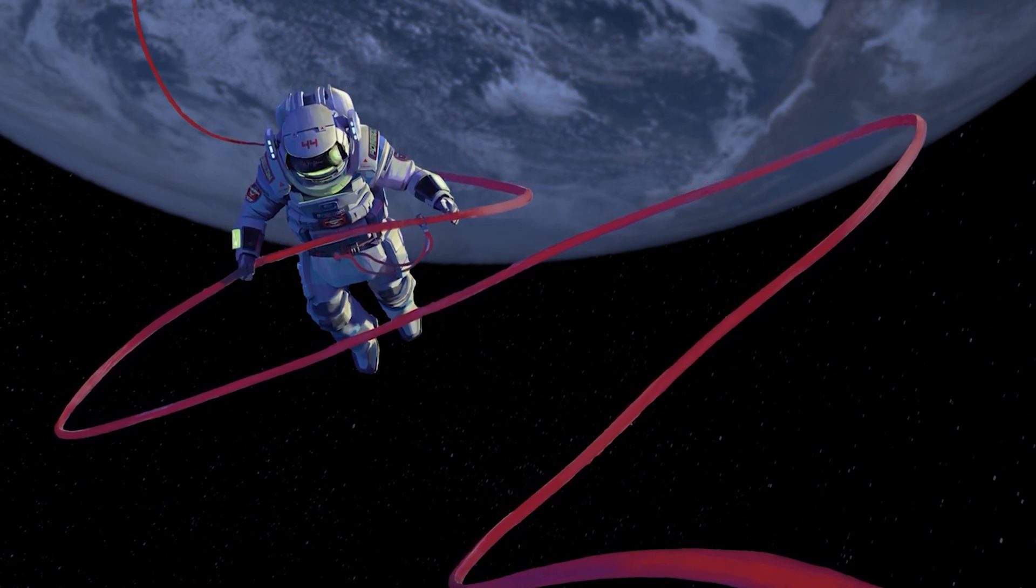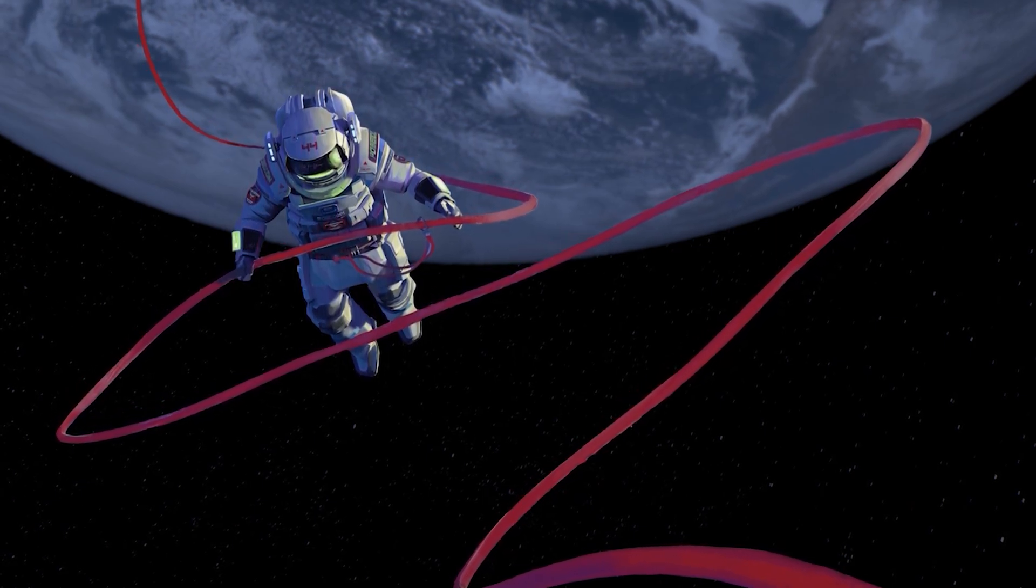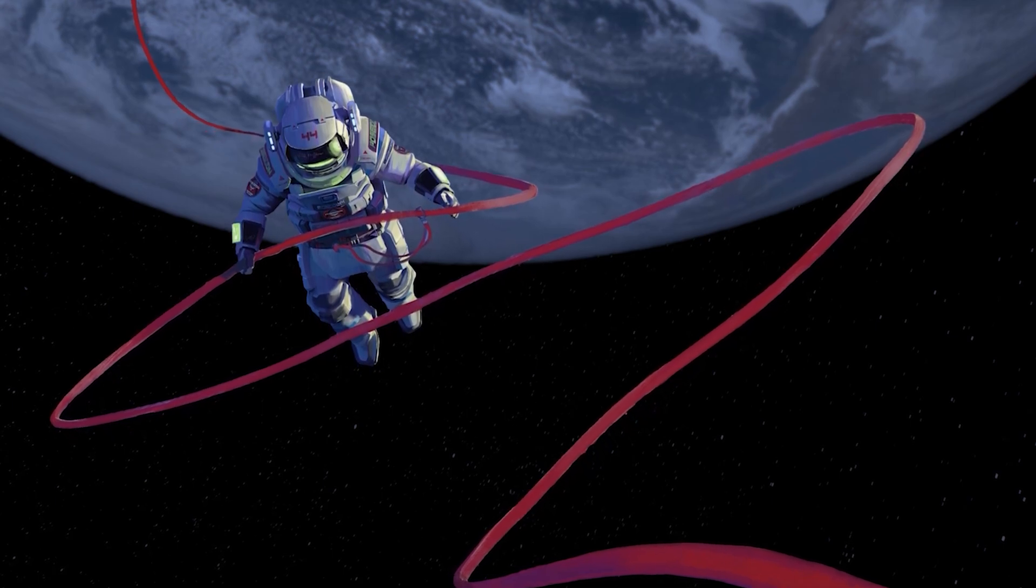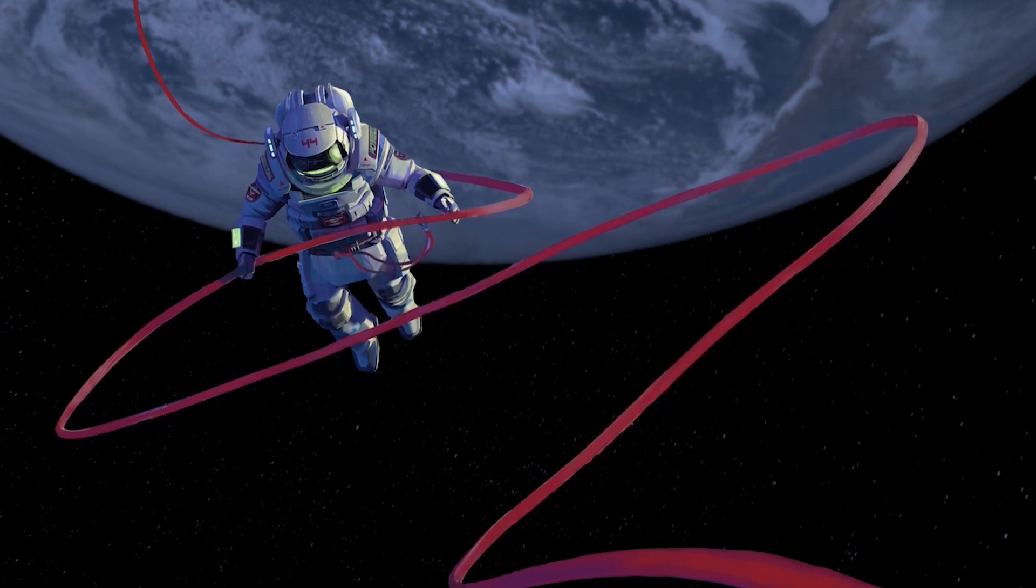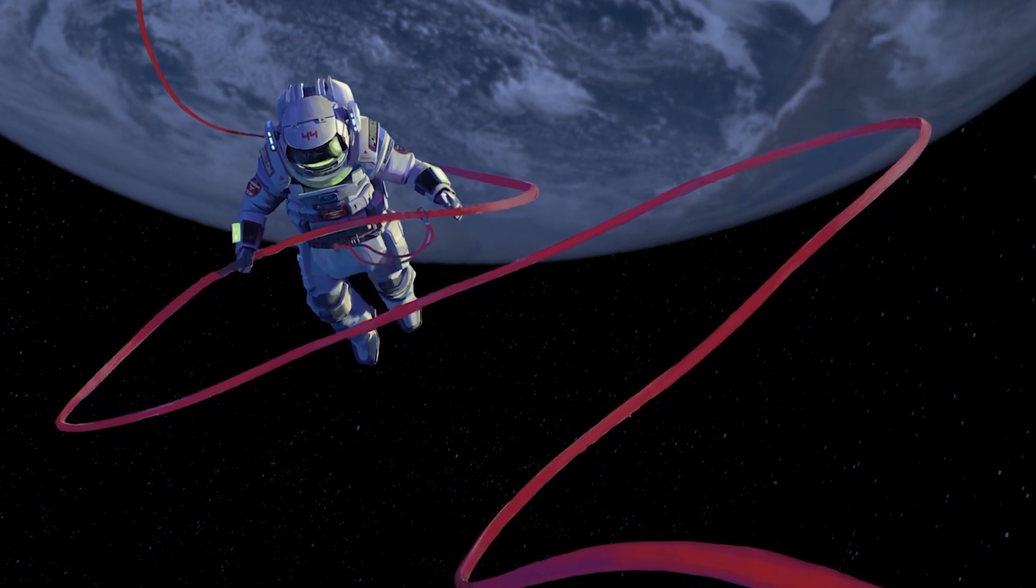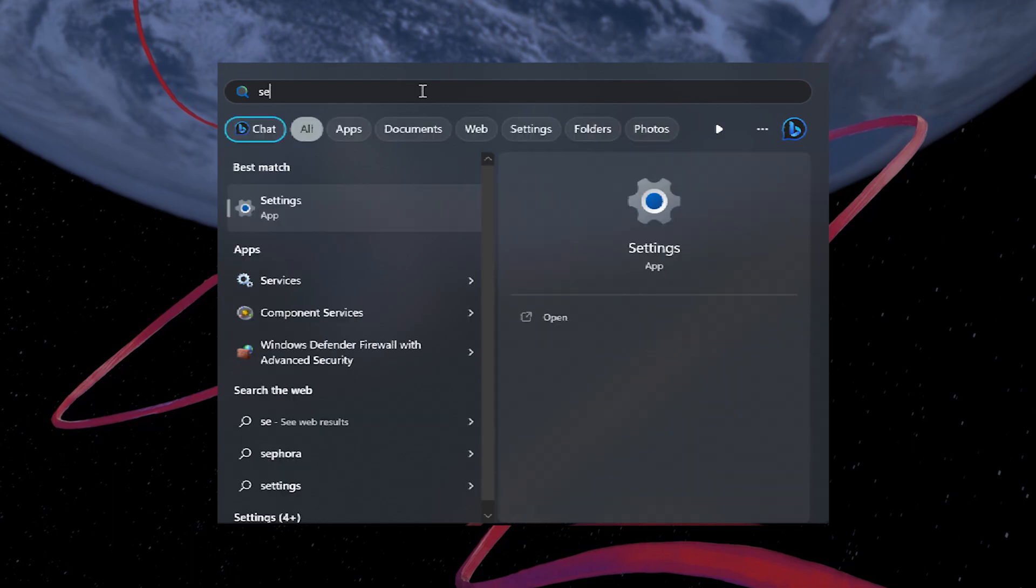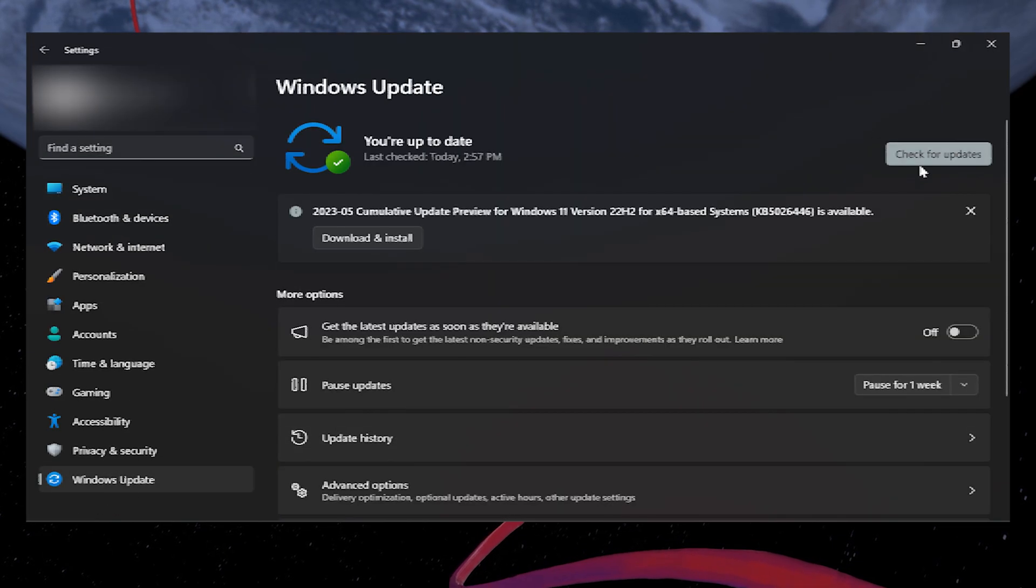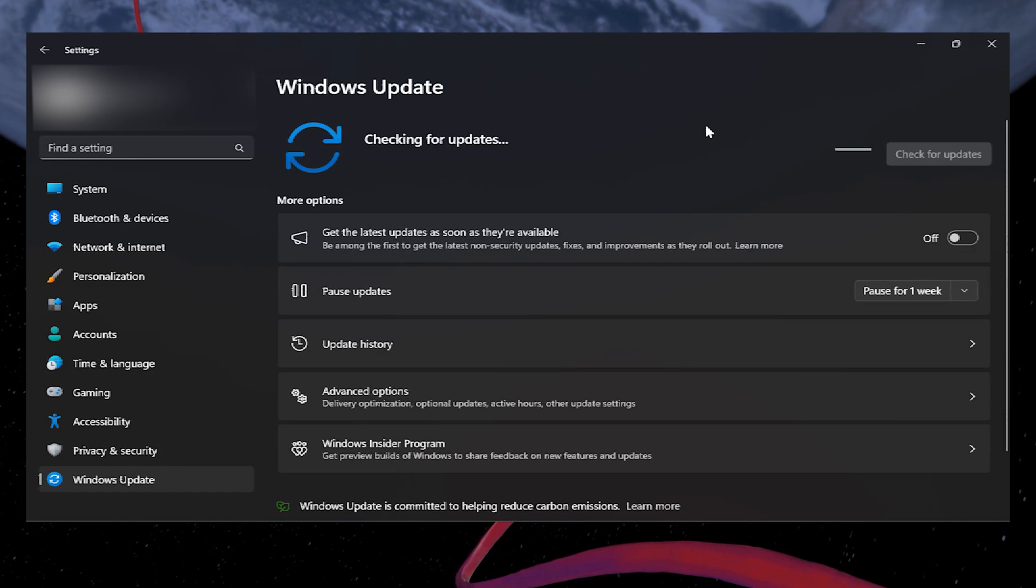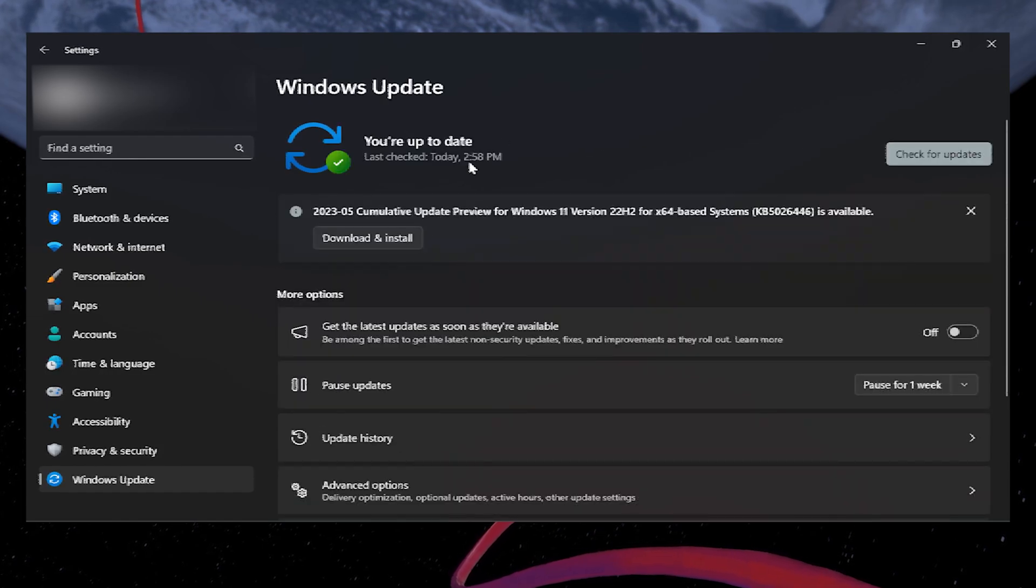Keeping your Windows system and Roblox client up to date is crucial for optimal performance and stability. To ensure you're not encountering the authentication field error due to outdated software, let's check for updates. Go to your Windows settings and click on Windows Update. From there, click on Check for updates to scan for any available system updates.